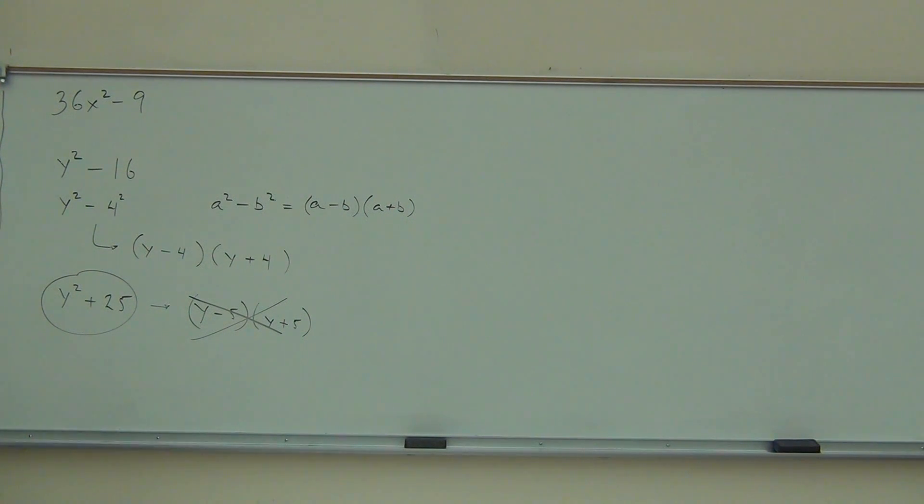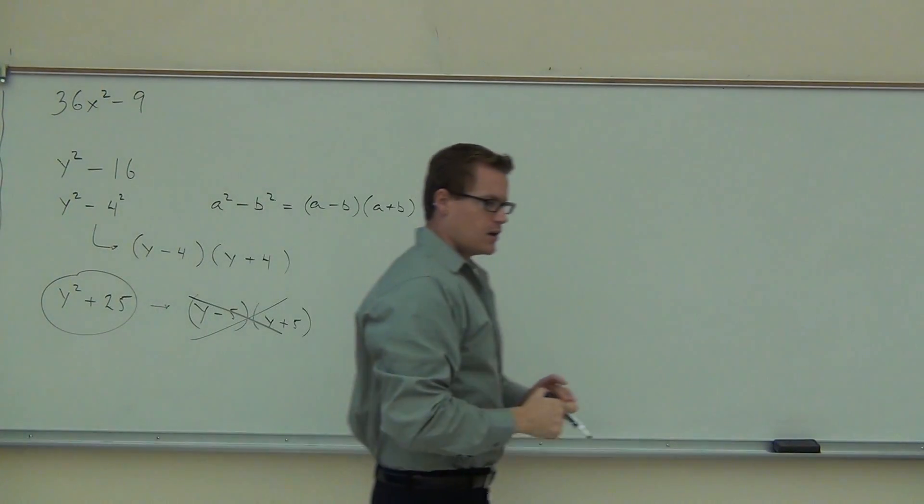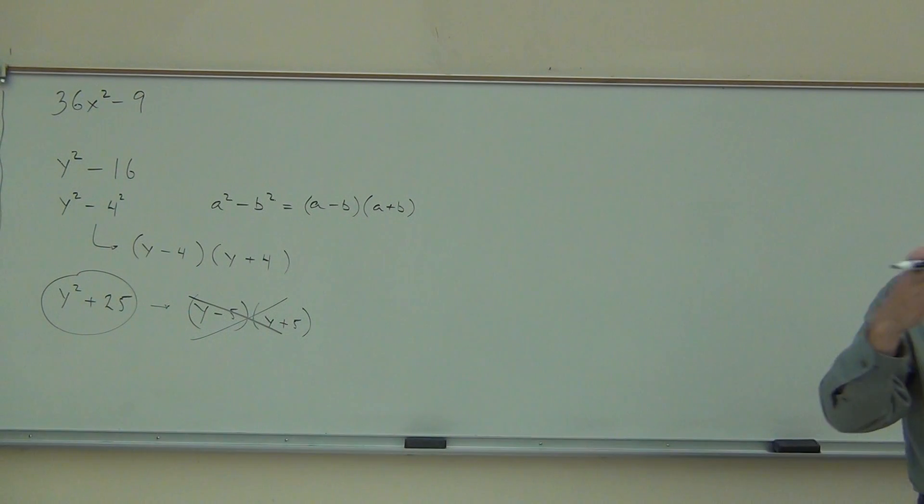This one stays just like it is. You can't do anything with that as far as factoring goes. How many of you understood that? Feel okay about the fact that we can't factor some things? Do you feel okay about the two terms? First thing we do is we factor out a greatest common factor. Next thing we do, we see if it's a difference of squares. If it's not a difference of squares or a difference of cubes or a sum of cubes, you'll leave it alone because you can't do anything with it. Let's move on to the three terms.